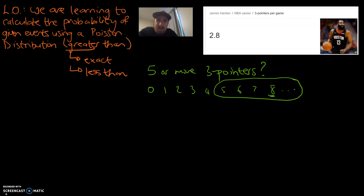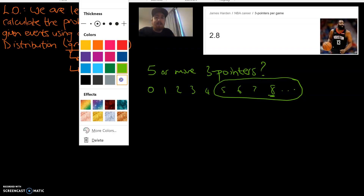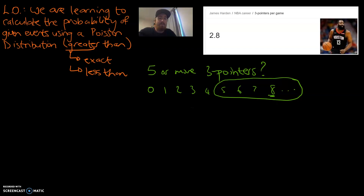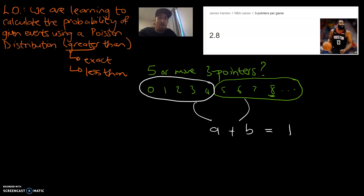The only issue with this one is, for our less than questions, we were told to circle the highest value and that's our x value for our calculator. We can't do that with this question. Our graphics calculators only work in this direction — it has to start at zero and goes up until you tell it to stop. That means we can't tell it to start at five and go onwards. But what we can do is we can find the smaller group, because we know that group plus that group — group A plus group B — will add together to be one, because they represent all possible outcomes.